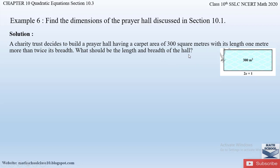The solution setup was explained in my first video on quadratic equations — the introduction part. If you haven't watched it, find the link in the description box or click the i button above. Let the breadth of the hall be x meters. Then the length is 1 + 2x meters, since the length is 1 meter more than twice the breadth.